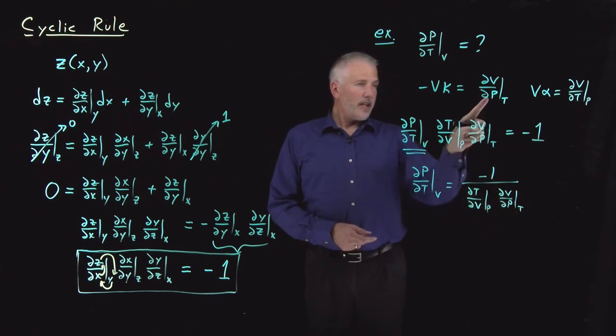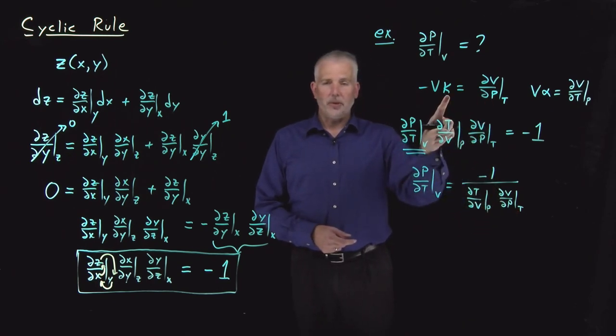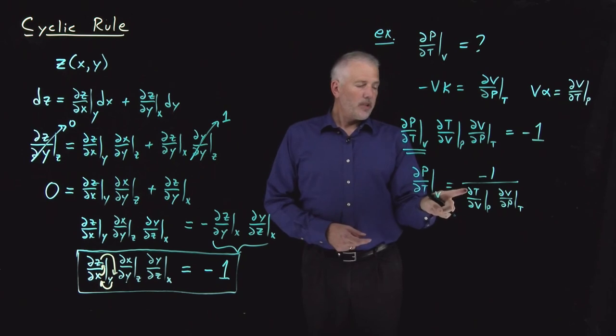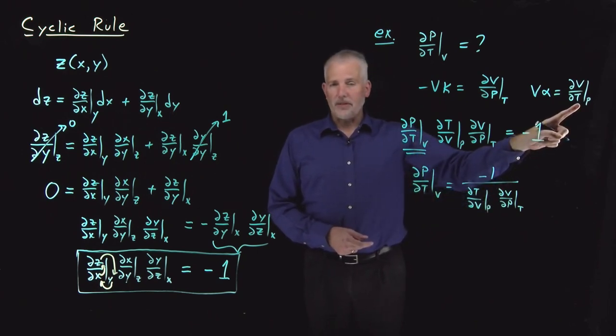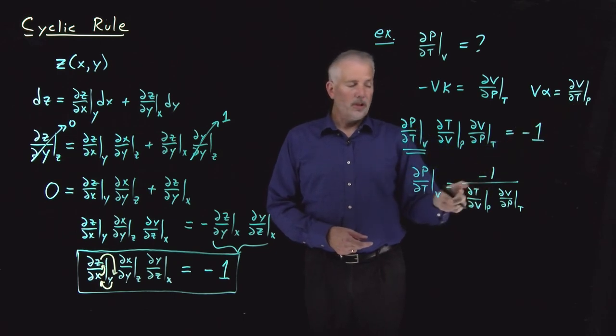So if we look back at the things we know the names of already, ∂V/∂p at constant T, that's very closely related to the isothermal compressibility. This one, ∂T/∂V at constant p, that looks like this one, but upside down. So we're going to need to use the reciprocal rule to understand this one.